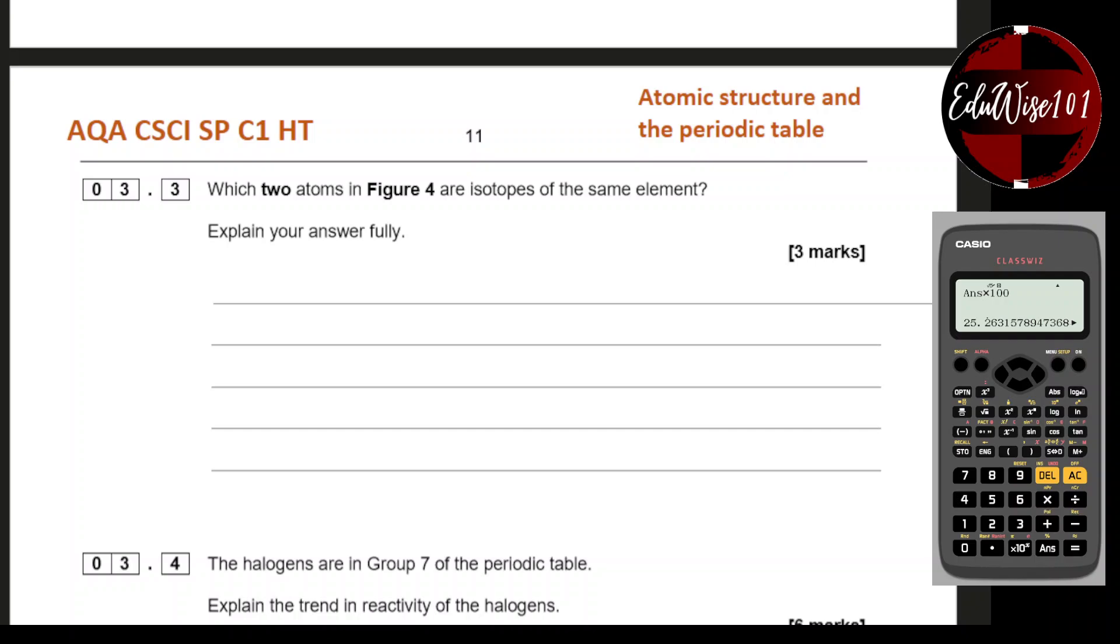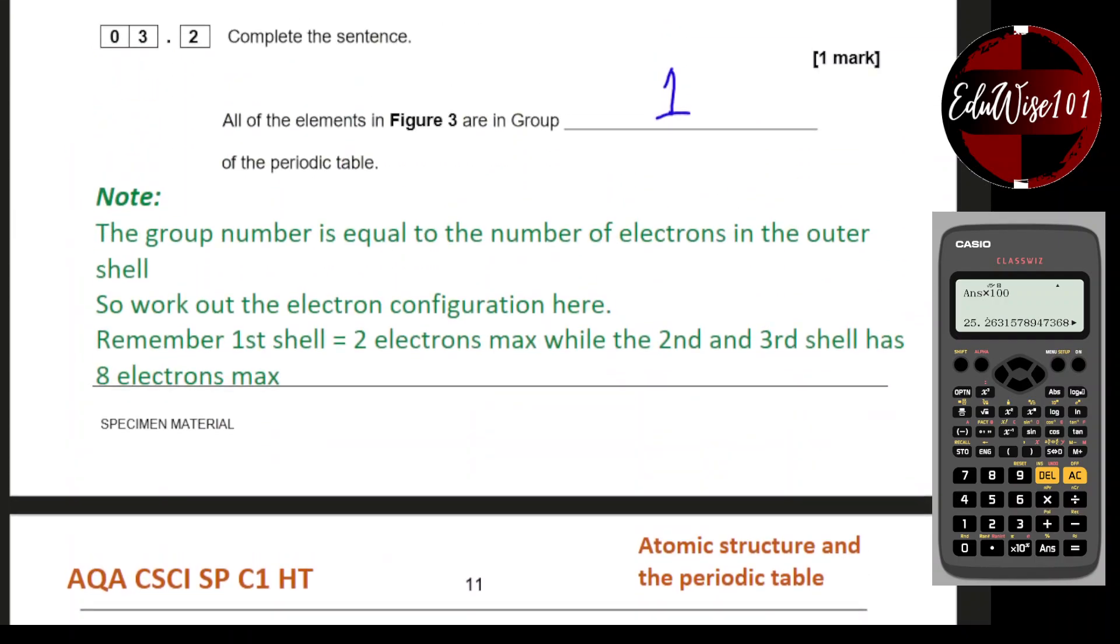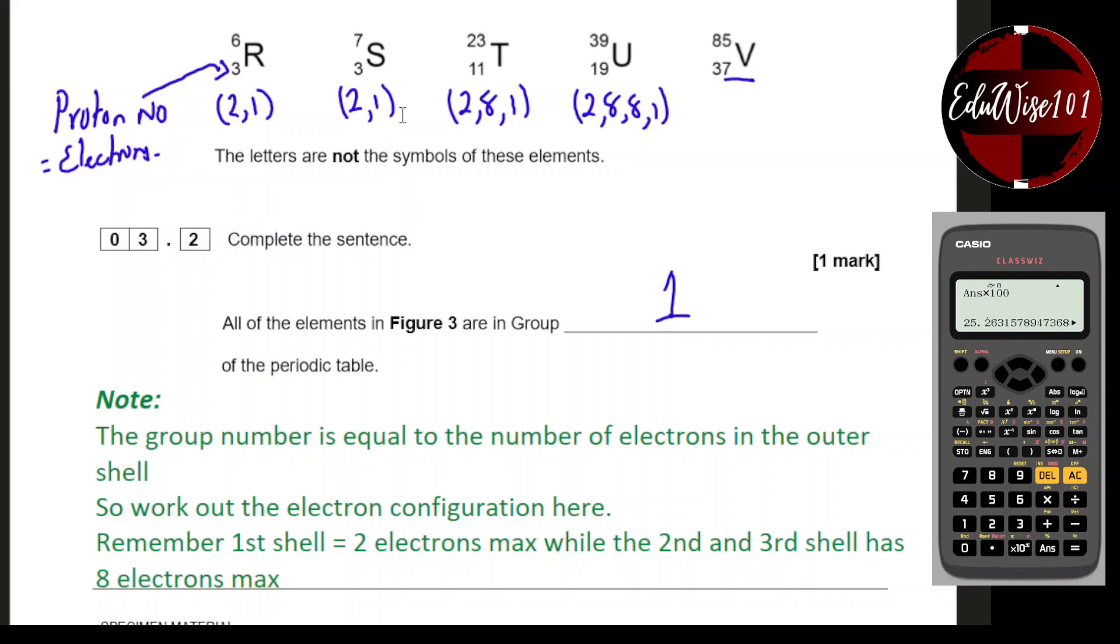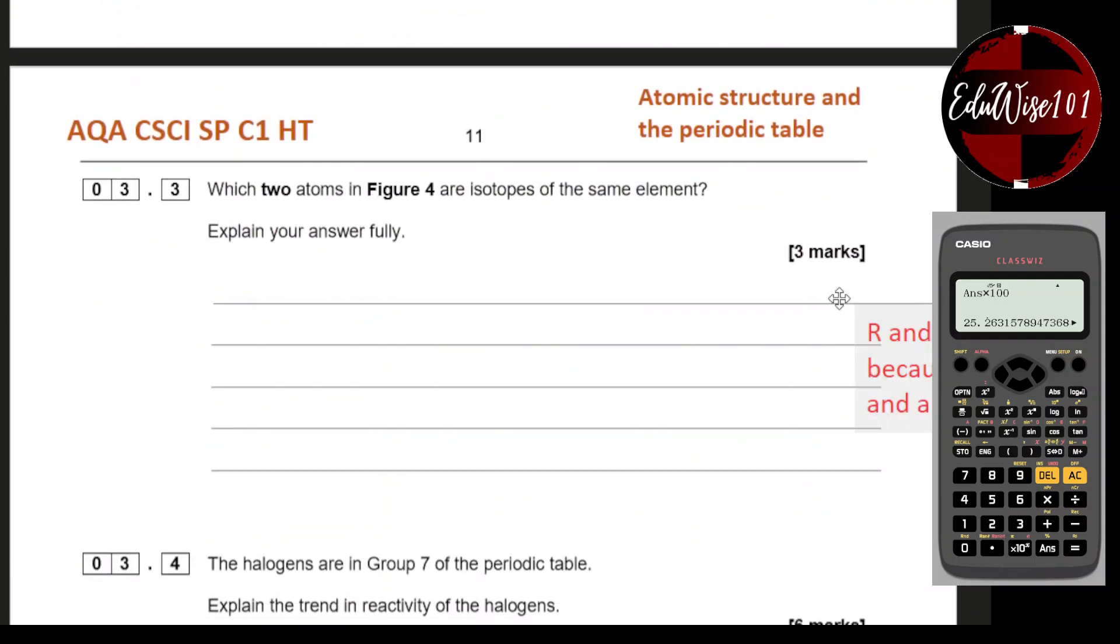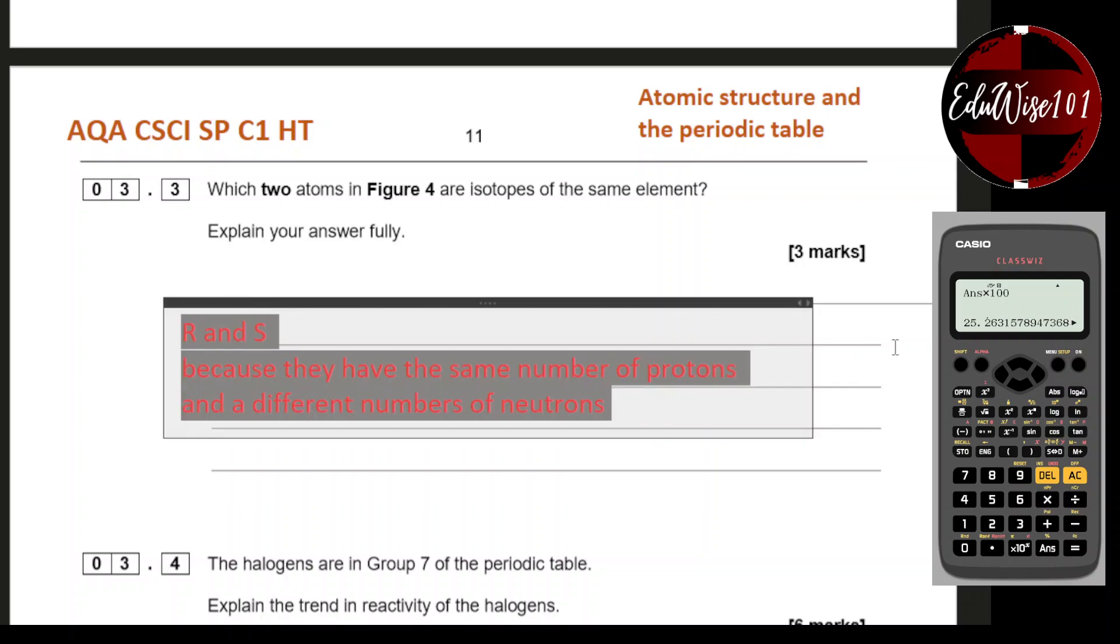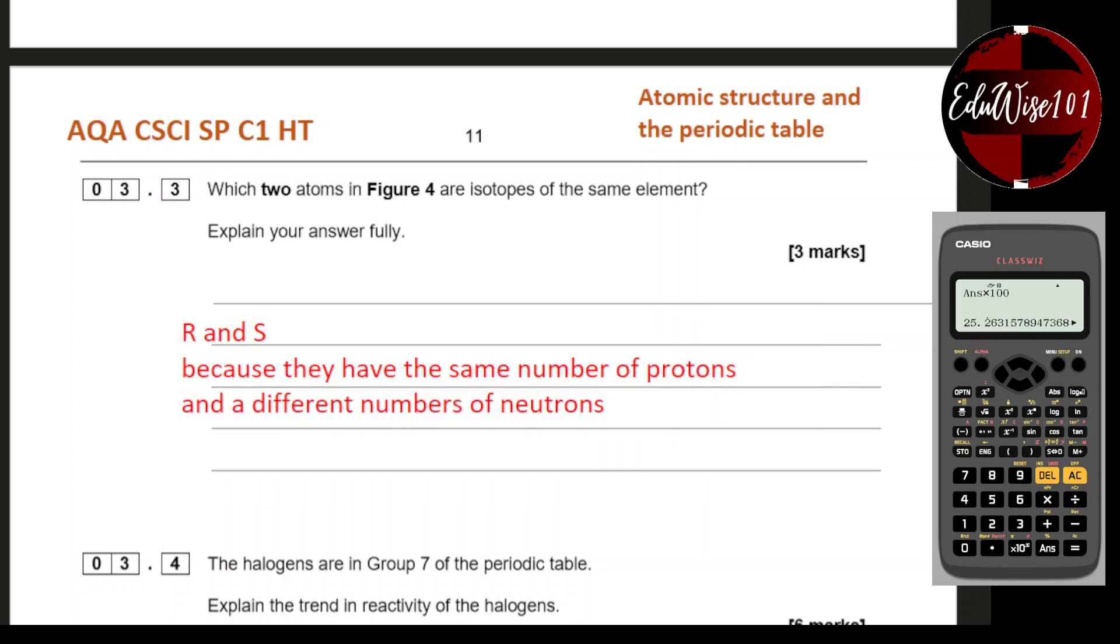Question 3.3: Which two atoms in Figure 4 are isotopes of the same element? We were talking about R and S being isotopes because they have the same number of protons. Because they have different mass numbers, they have different numbers of neutrons. The answer is R and S because they have the same number of protons and a different number of neutrons.